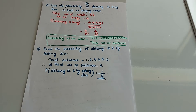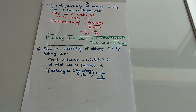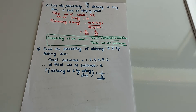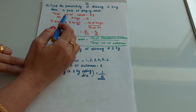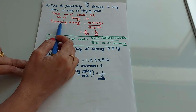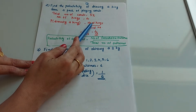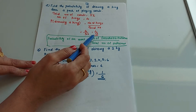Our second question is: find the probability of drawing a king from a pack of playing cards. We know that in a pack of playing cards there are 52 cards and four symbols. In each symbol there is one king — two red kings and two black kings — so there are four kings in total. The probability of drawing a king is 4 by 52, which simplifies to 1 by 13.